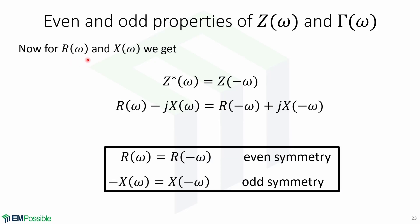Now for R of omega, which is the real part of the impedance, and X of omega, which is the imaginary part, we obtain this. This means that the resistance as a function of frequency has even symmetry, and the reactance has odd symmetry.